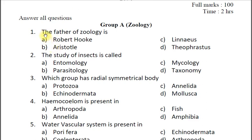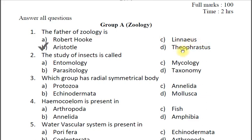Question one: The father of zoology is — A Robert Hooke, B Aristotle, C Linnaeus, D Theophrastus. The answer is B Aristotle. Robert Hooke is known as father of cell, Linnaeus is known as the father of taxonomy, and Theophrastus is the father of botany.